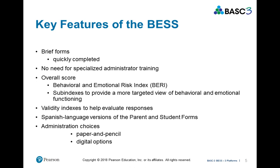Some of the key features of the BESS are that the form is brief, so it can be completed quickly. There's no need for specialized training in order to administer. It provides an overall score as well as subindexes. Those subindexes are on the parent and teacher forms: external rating index, internal rating index, and adaptive skills risk index. On the student form, there's an internal risk index, a self-regulation risk index, and a personal adjustment risk index.